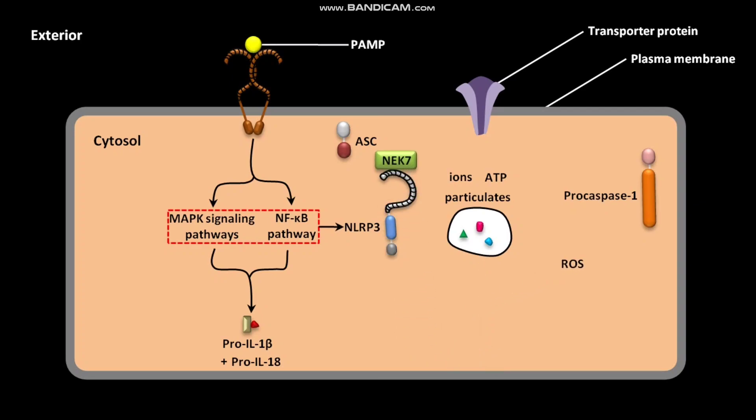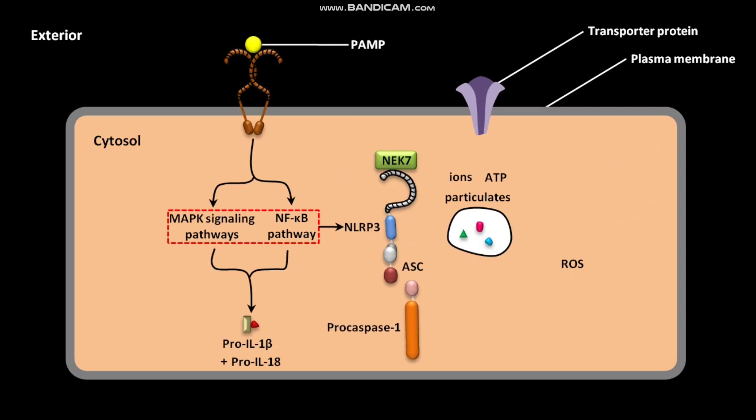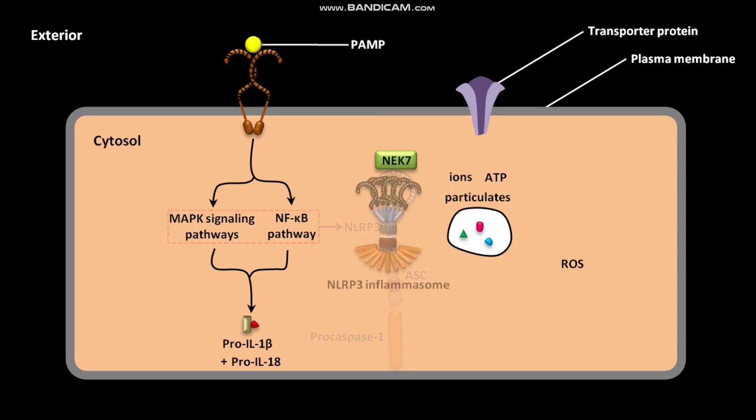NEK7 then interacts with NLRP3. This binding triggers the assembly of NLRP3 with ASC and Procaspase-1, producing the NLRP3 inflammasome.